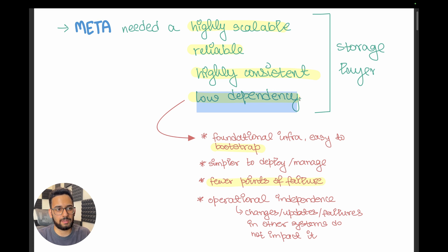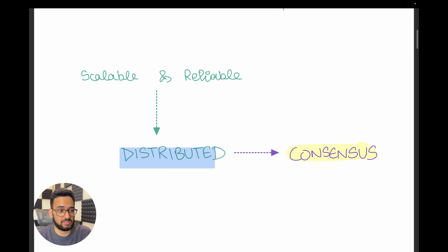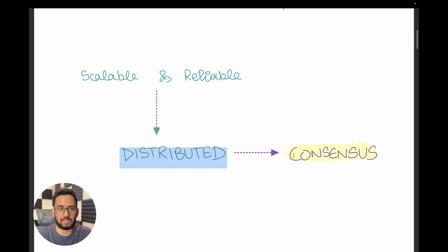So you want your foundational infrastructure to depend on as few external factors as possible — therefore, you want it to be low dependency. Now, if you want something to be scalable and reliable, you will usually want it to be distributed. Whenever something is distributed, you need consensus among its different nodes. When you have multiple replicas, they should all see a consistent view of the data they are storing so they can provide this consistent view to clients.